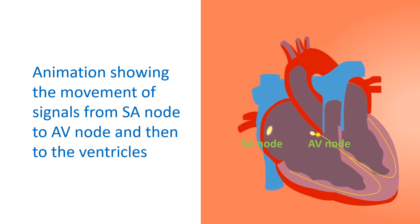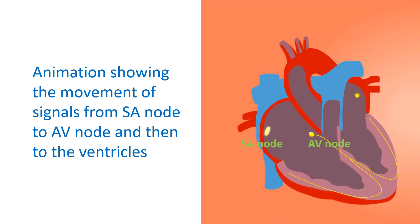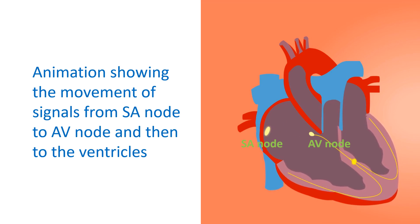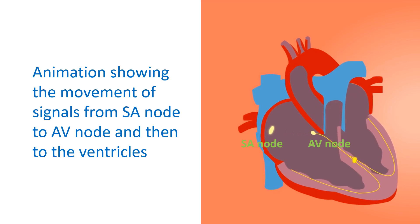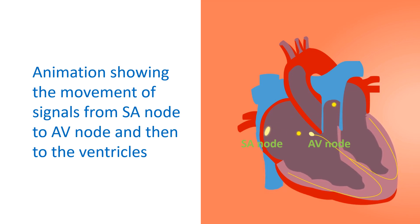The upper chambers of the heart receive the blood returning from the body and pass it on to the lower chambers, which pump it to the body. If the natural delay produced by the AV node is not there, contraction of the lower chambers will occur earlier, at a time when they have not been fully filled. This will reduce the output of the lower chambers.